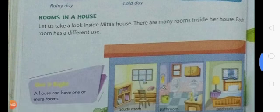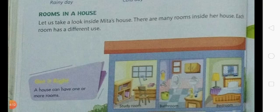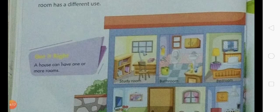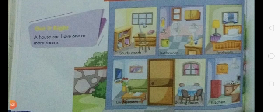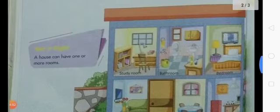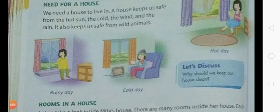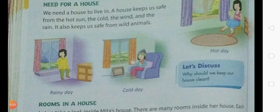Let us look inside Meeta's house. There are many rooms inside her house and each room has a different use. A house can have one or more rooms — such as a study room, bathroom, bedroom, living room, dining room, and kitchen. People living in a small house usually have only one room. Our house is our home — here we play, study, relax, and spend time with our family.